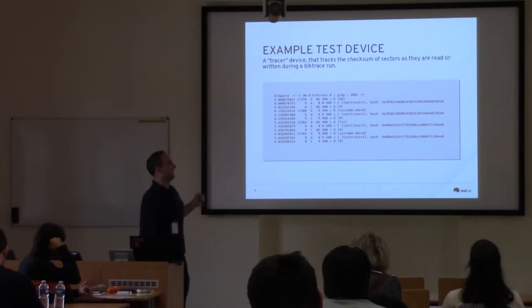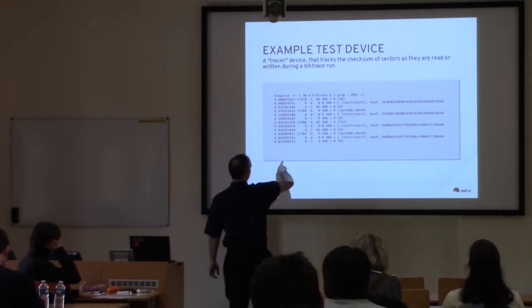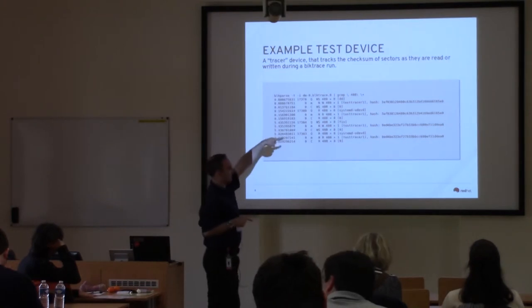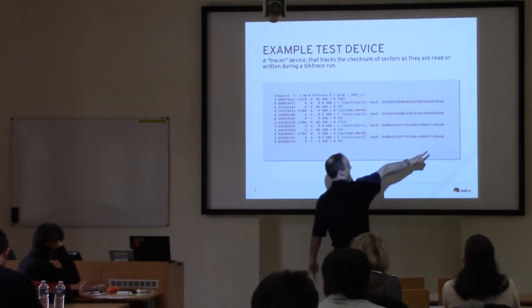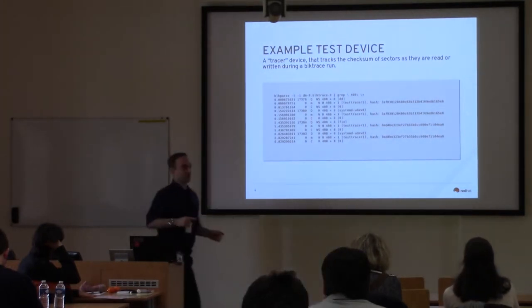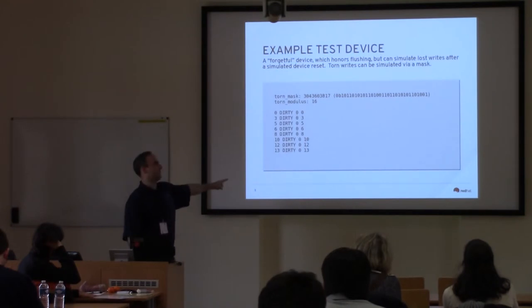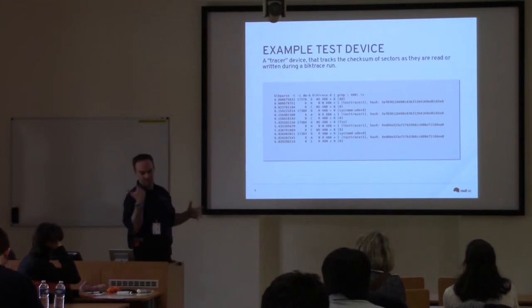There's another test device: a tracer device. This is a block trace — time, process ID, queued, completed. So these are write-sync operations that are queued and completed. But in between, there are messages reporting the data hash of the block, so you can know if the data has changed from a specific value. With the forgetful device and the tracer device, we were able to find a bug in XFS in late 2017, which helped Brian Foster fix a bug in the XFS log.